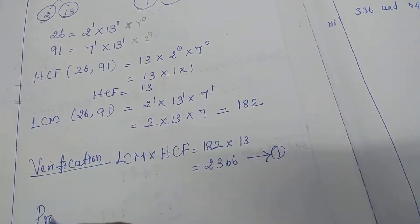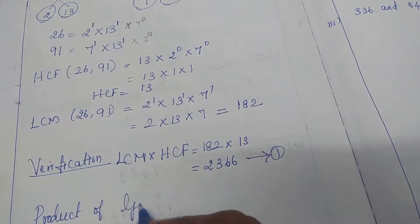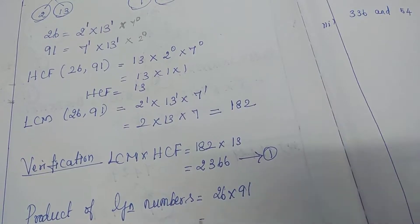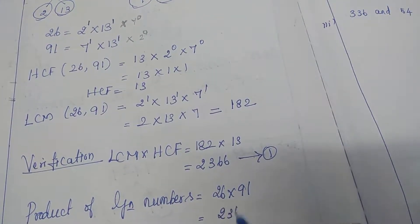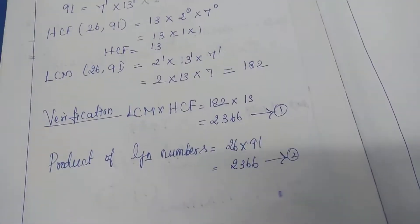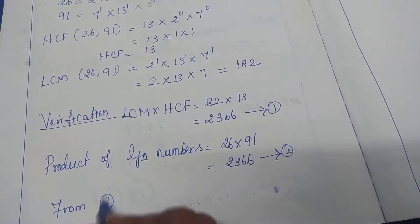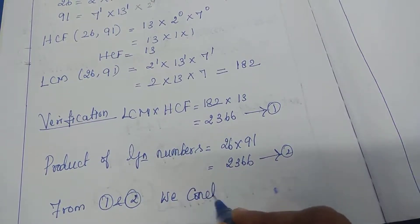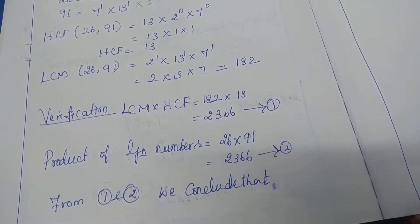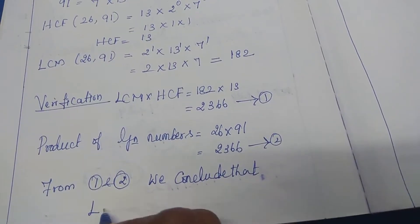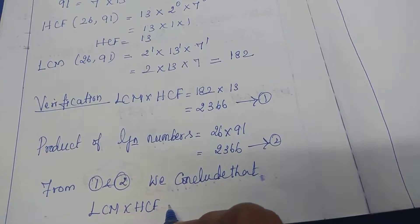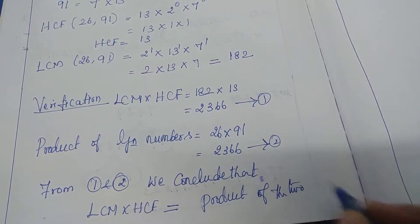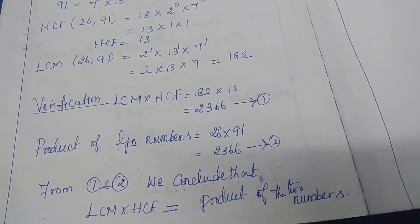For the right hand side, the product of the two given numbers: 26 into 91 = 2366. This is equation number two. From one and two we conclude that LCM into HCF equals the product of the two numbers. Hence division number one is over.